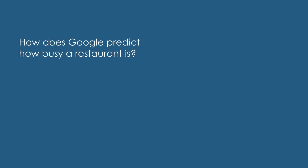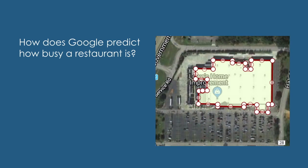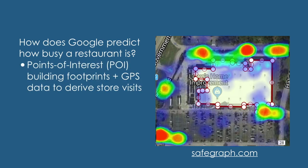Have you ever wondered how they did that? It turns out, Google has the best point of interest building footprint, which allows them to know exactly the location, shape, and size of the shop. Combine this with GPS data of human movement, they can derive store visits relatively easily.